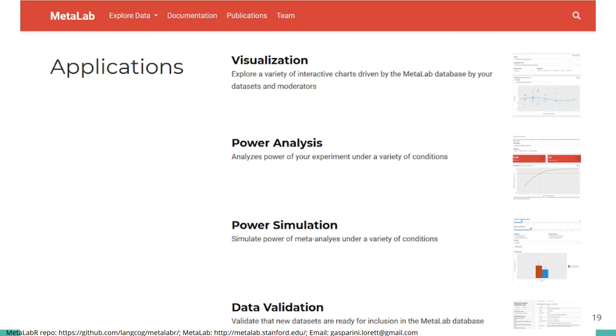As well as using the MetaLabR package in R, the package is the basis for the shiny apps that are up on the MetaLab website. These applications are visualizations for exploring the results of existing datasets, power analysis and power simulation tools to help researchers plan their own studies, and data validation tools to assist reviewers to make sure their planned meta-analysis fits the MetaLab structure and format so that their data can eventually be integrated into MetaLab.